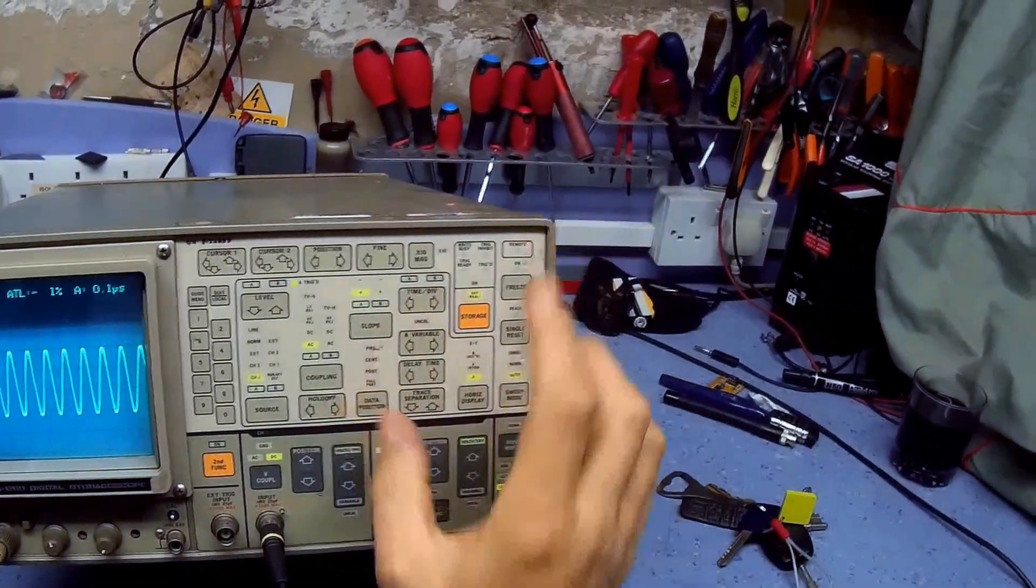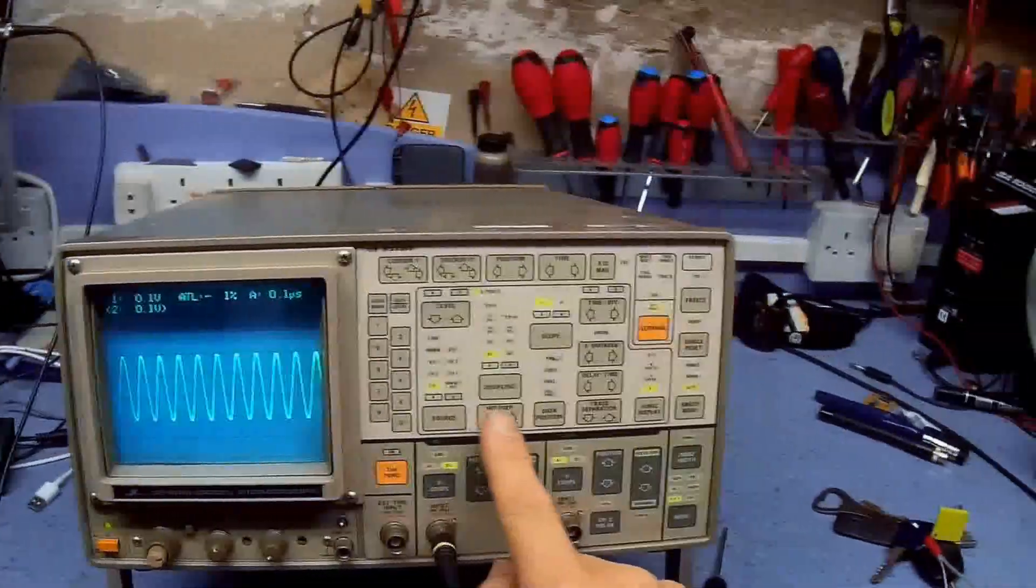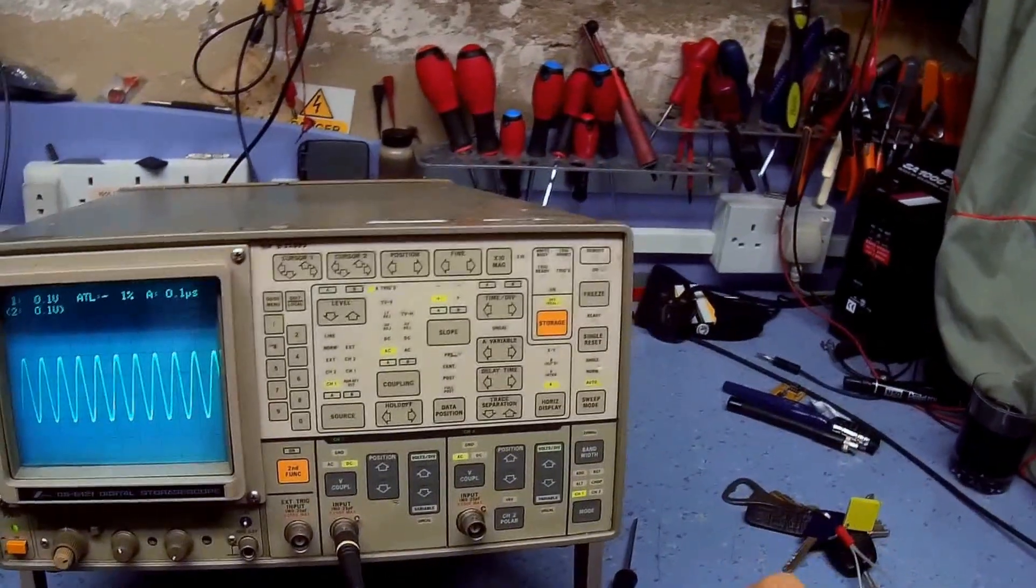Bandwidth limiter is here, limits it to 20 megahertz, and as you can see, because we're at 10 megahertz, it drops the frequency, the waveform off slightly. Where else have we got? We've got hold off adjustment, normal, normal sort of thing with the hold up, hold off, same as an analogue scope with the hold off adjustment.